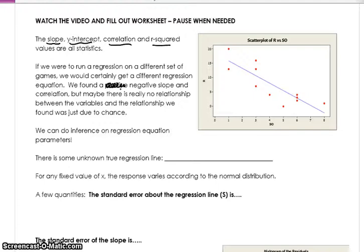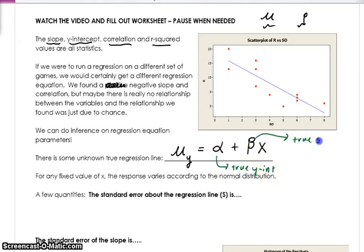So there is some unknown regression line. Just like we have mu that stands for means and p, these are parameters, we have a regression model. That is, the average y, notice that's a mu, is equal to alpha plus beta x. Now, this alpha, not to be confused with the significance level, this is the true y-intercept, and this beta is the true slope.